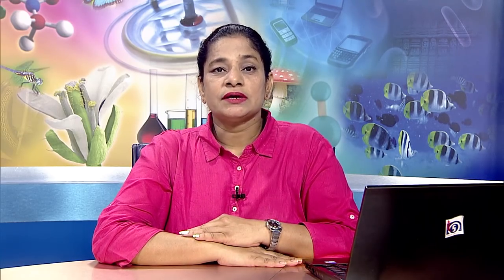The third disease is mad cow disease, or Bovine Spongiform Encephalopathy (BSE). It is caused by an infectious agent with a long incubation period of between 2 and 5 years. Death usually follows within a year of the onset of symptoms, and no treatment or palliative measures are known. First recognized in cattle in the United Kingdom in 1986, mad cow disease became epidemic there, particularly in southern England. After its emergence, concern grew over a possible relationship between the animal disease and the occurrence of brain disease in humans, possibly due to consumption of infected beef.